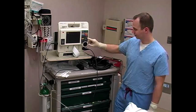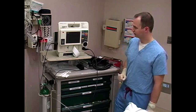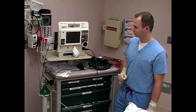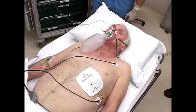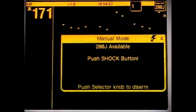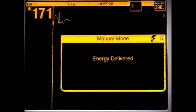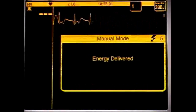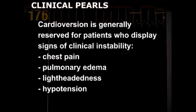Cardioversion is the application of a brief electrical current across the chest wall and is used to treat a variety of both supraventricular and ventricular tachydysrhythmias. Cardioversion is generally reserved for patients who display signs of clinical instability, such as chest pain,